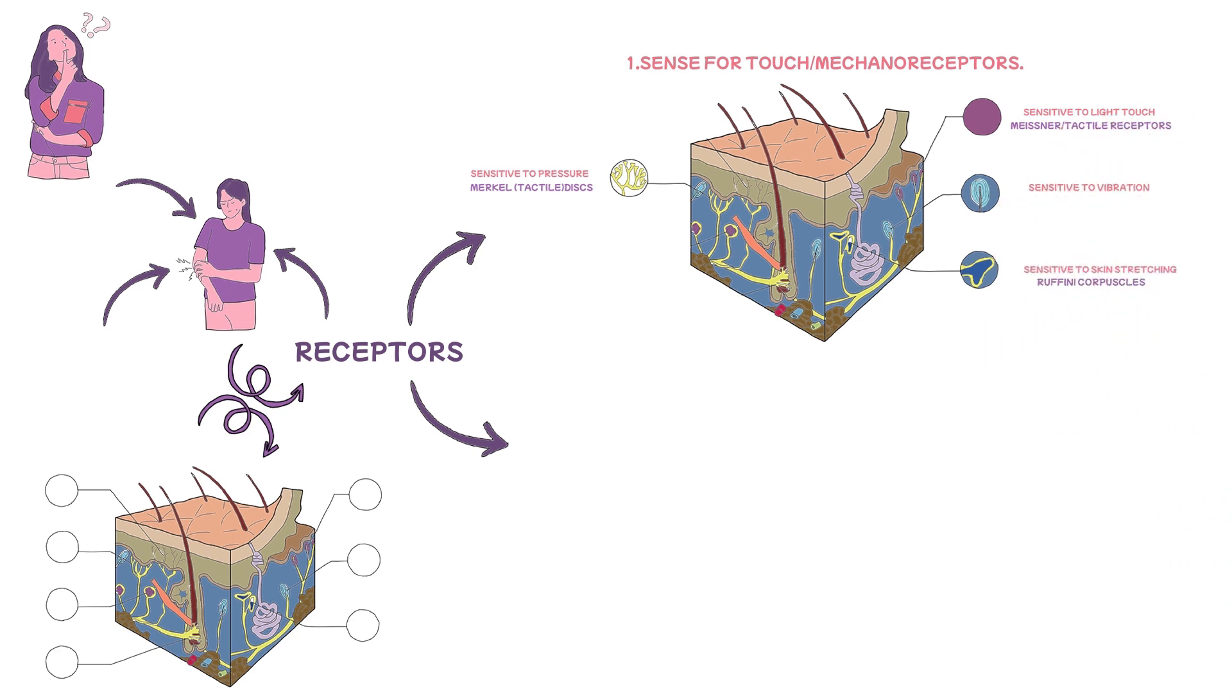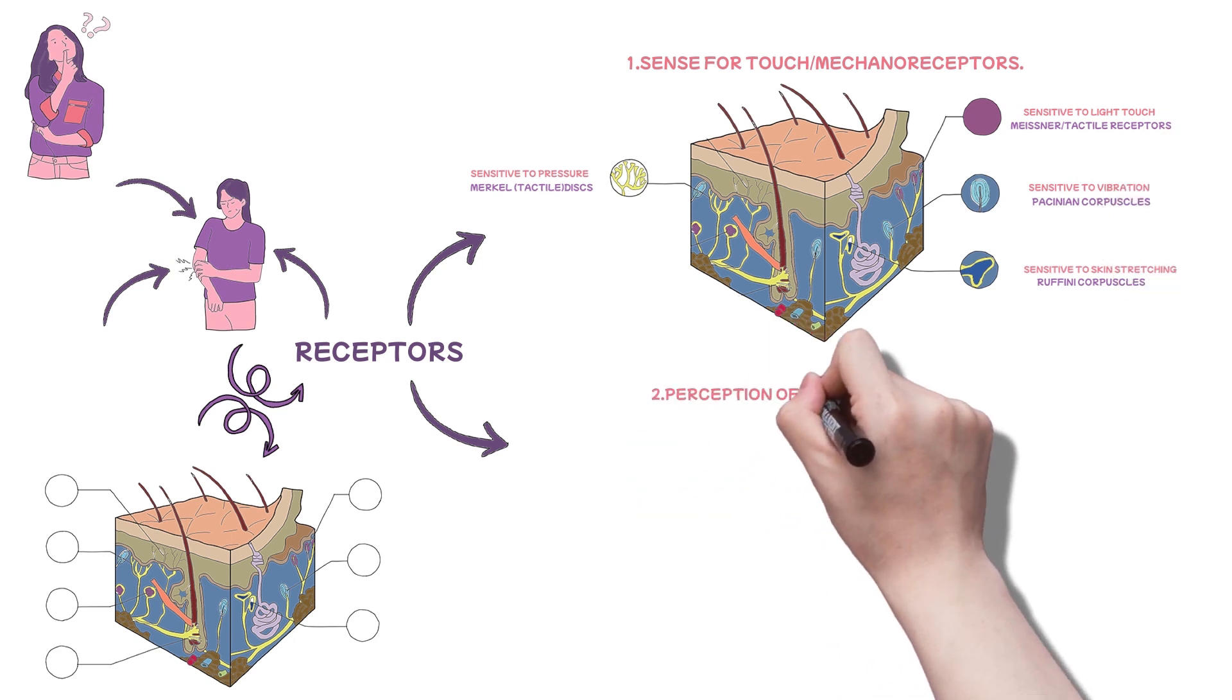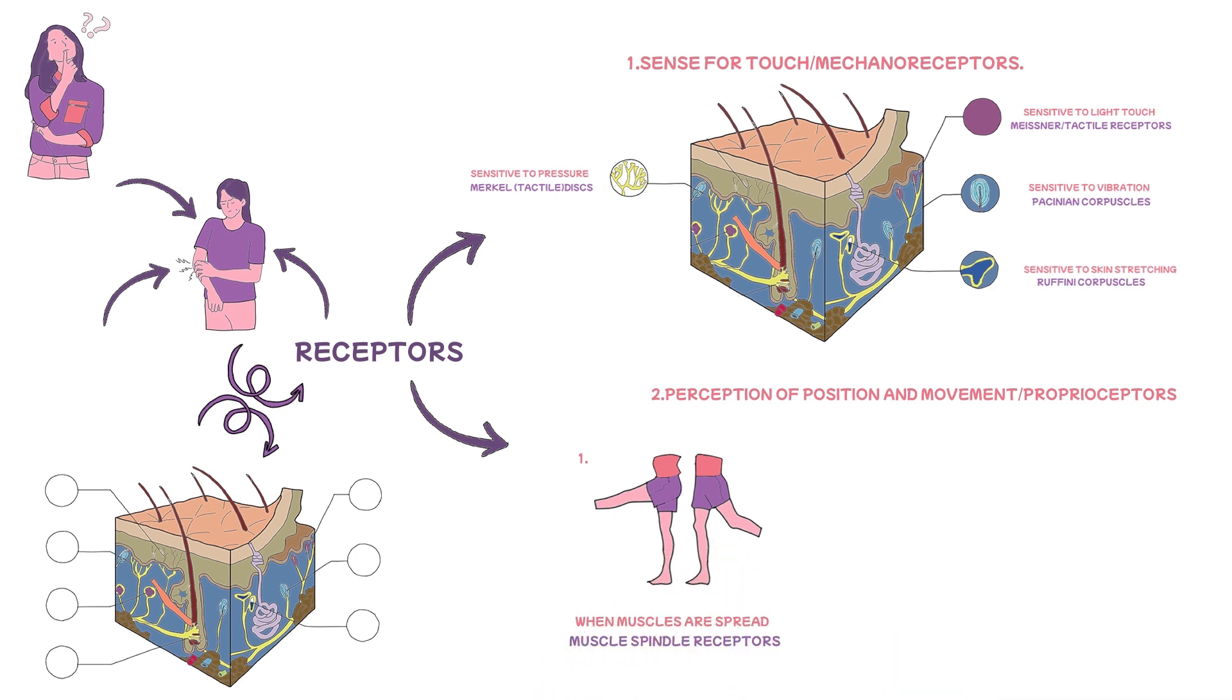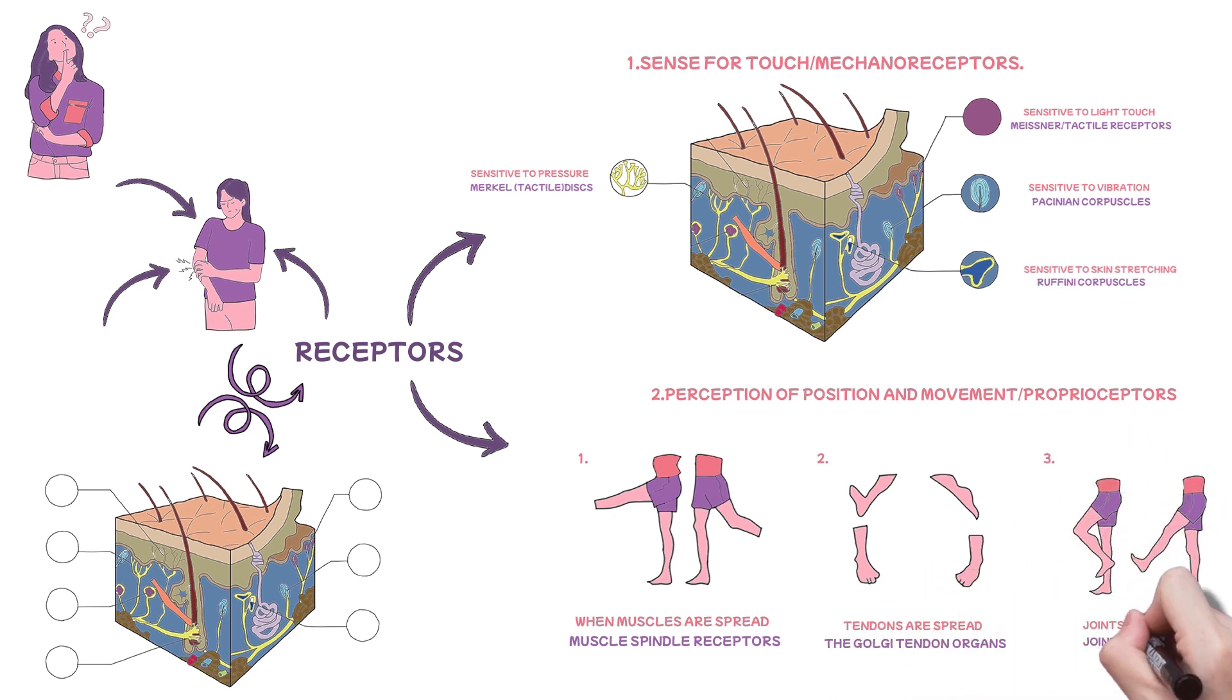The second type of receptor is one responsible for the conscious perception of one's own body parts, position, and movement. These are referred to as proprioceptors. There are three types: those that detect when muscles are stretched, the muscle spindle receptors; those that detect when tendons are stretched, the Golgi tendon organs; and finally, those that detect when joints are moved, the joint receptors.